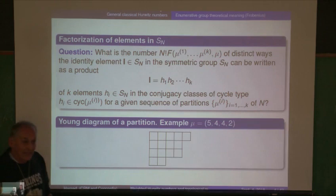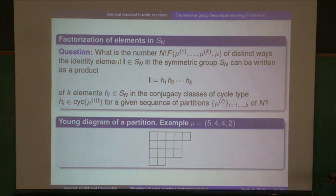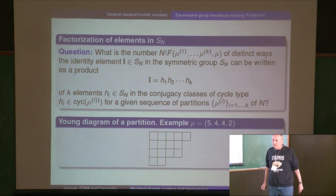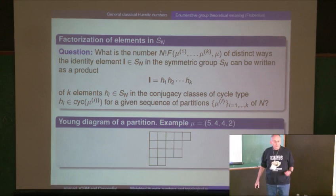Starting at the beginning — I'm assuming you know what a partition is. First question: look at the symmetric group on n elements. How many ways can you take the identity element and factorize it into k distinct factors, where you specify the conjugacy class of each factor? The conjugacy class is a partition given by the cycle lengths. That number, when multiplied by n factorial, is the combinatorial Hurwitz number.